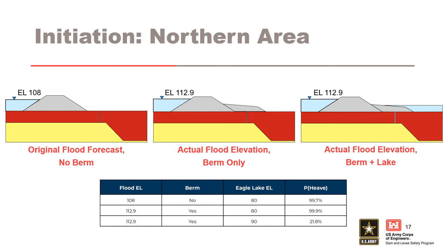The second case adjusted the flood elevation to the actual Mississippi stage of 112.9 feet and accounted only for the presence of the emergency berm on the land side of the levee. This scenario had a flood differential of approximately 33 feet — by far the largest loading experienced by the embankment — and resulted in a probability of heave of 99.9%. The final case evaluated the actual conditions present during the flood: a flood elevation of 112.9 feet, the emergency berm on the land side, and Eagle Lake at elevation 90 feet. The flood differential for this final scenario was approximately 23 feet and had a probability of heave of 21.8%. The combination of the emergency berm and the Eagle Lake raise produced a significant reduction in the probability of initiation of backward erosion piping in the northern area.